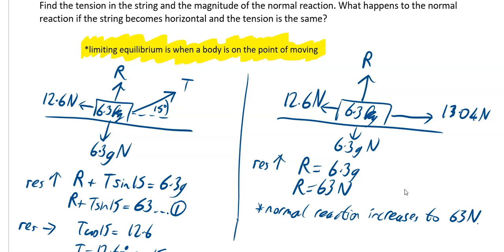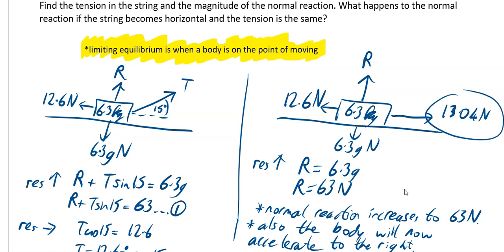And also, they did not ask us about this, but also the body will now accelerate, and according to our diagram it will accelerate to the right. If you look to the right, you have got 13.04 newtons, to the left you have got 12.6 newtons, so you have got an overall resultant force going to the right. That is why your body will now accelerate to the right.